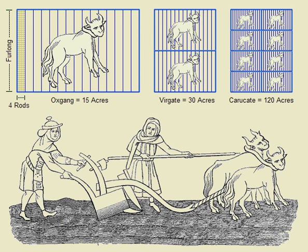The acre is commonly used in a number of current and former Commonwealth countries by custom, and in a few it continues as a statutory measure for legal transactions. These include Antigua and Barbuda, American Samoa, the Bahamas, Belize, the British Virgin Islands, the Cayman Islands, and Canada.